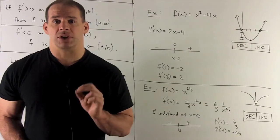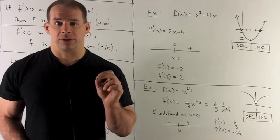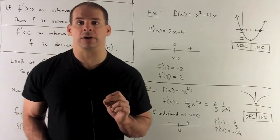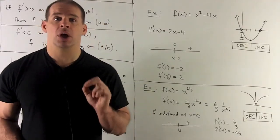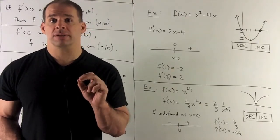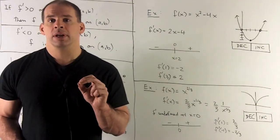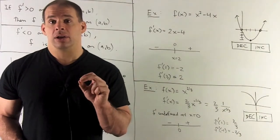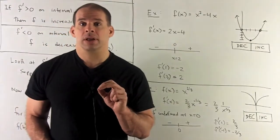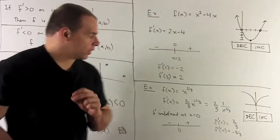Next example, consider f of x equal to x to the 2 thirds. I take its derivative, bring the 2 thirds down, take 1 off the exponent, gives me 2 thirds x to the minus 1 third. I can rewrite that as 2 thirds, 1 over x to the 1 third. Now critical points. This will never be equal to 0. We can only get a 0 if the numerator equals 0. So we're going to be worried about getting undefined. That will occur when we're dividing by 0 or when the denominator is 0. The denominator will be 0 when x equals 0. So we have a critical point there. We'll mark that off on our line.